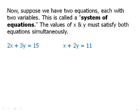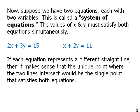Now, suppose we have two equations, each with two variables. This is called a system of equations. The values of x and y must satisfy both equations simultaneously. Well, this is interesting. If each equation is a line, then it makes sense that the unique point where those two lines intersect would be the single point that satisfies both equations.